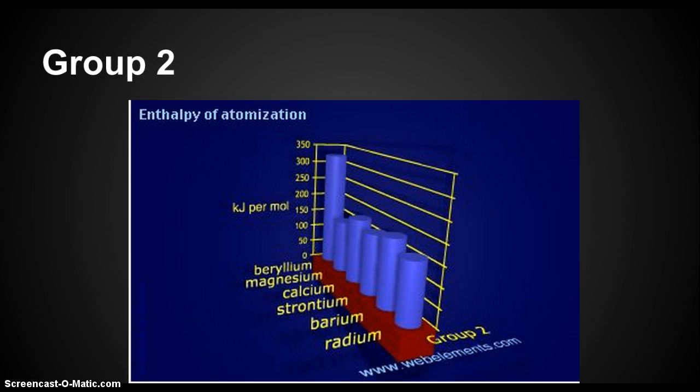Here's a picture of group 2. In group 2, the joules per mole increase and then decrease repeatedly, and beryllium is at a much higher joules per mole than any other element in this group.